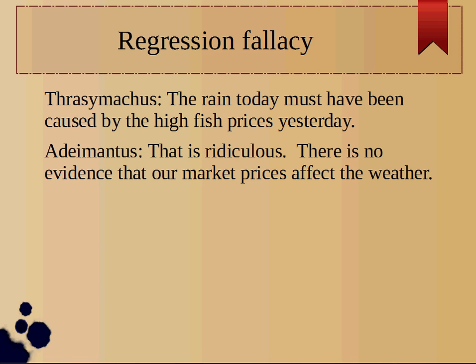And in the third one, Thrusimica says the rain today must have been caused by high fish prices yesterday. And Mantis says that was ridiculous — there's no evidence that market prices affect the weather. So you could also say this is the kind of fallacy where you're assigning the wrong cause and effect to something, but in this case it's also a regression fallacy.